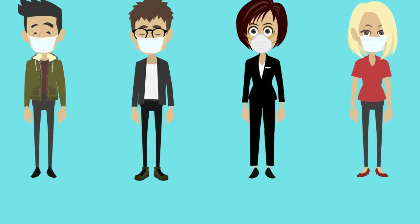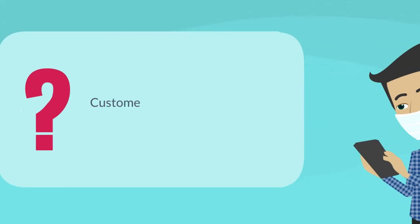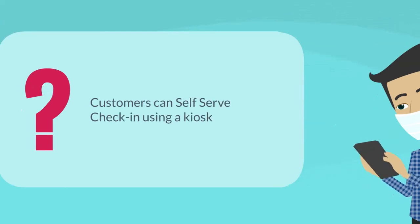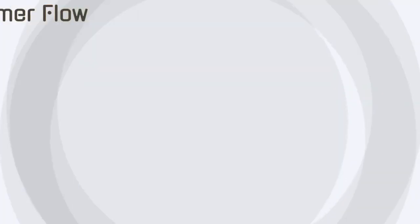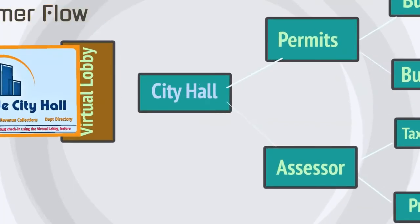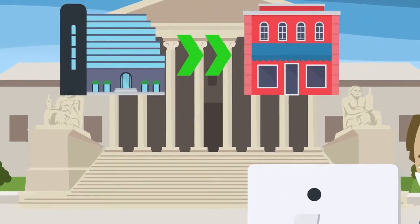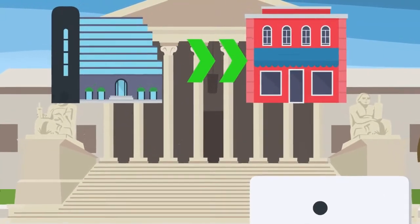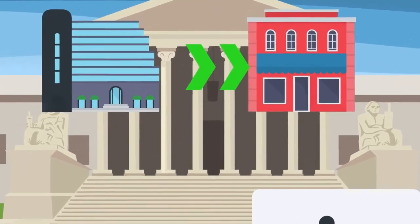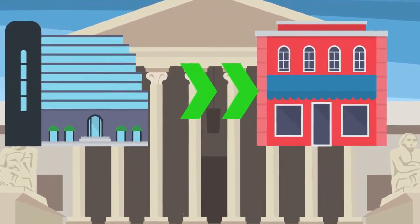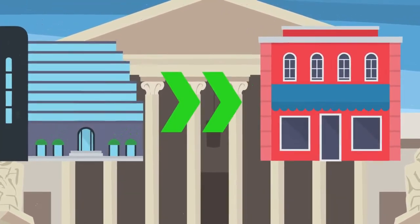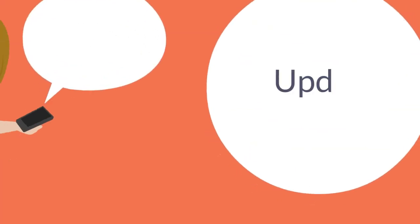Customer check-in and flow control: controlling customer flow requires customers to check in prior to entering the building. Customers can self-serve check in using a kiosk or a text-to-check-in code posted on the door when they arrive.